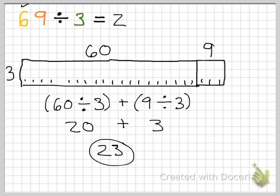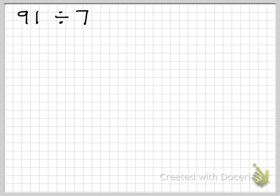So, 69 divided by 3 is 23. Let's do another one: 91 divided by 7. Now, sometimes you're not going to be able to break it up by place value — 7 doesn't go into 90, and it doesn't go into 1. So you're going to have to think: how can I break up 91 into two numbers that 7 divides evenly into? Thinking of compatible numbers, I know 10 times 7 is 70, and that's pretty close to 91. If I broke one number up into 70 divided by 7, how many would I have left to get from 70 to 91? That's 21 left, and I know that's divisible by 7.